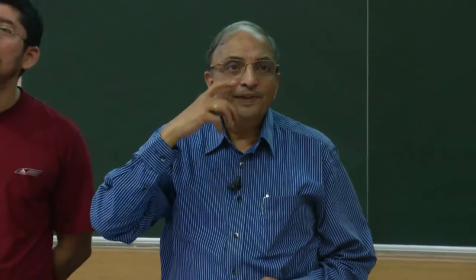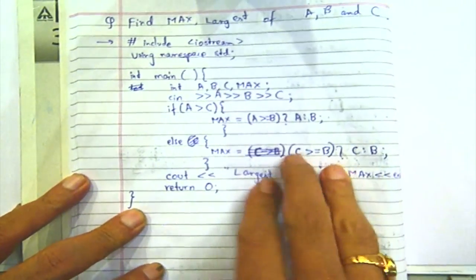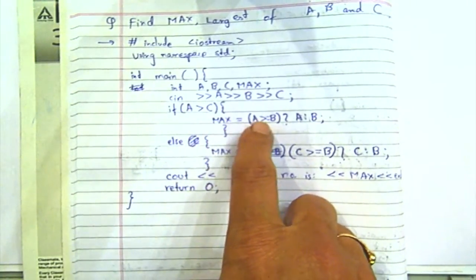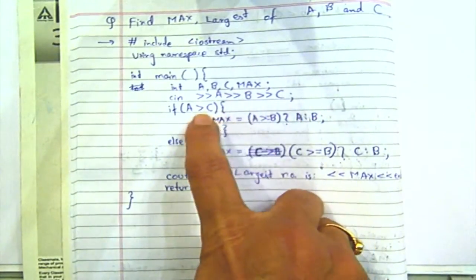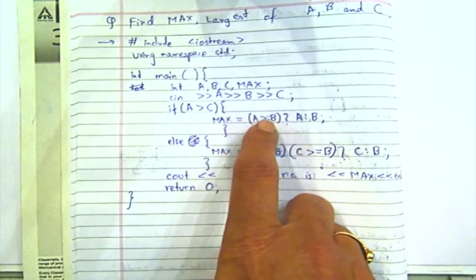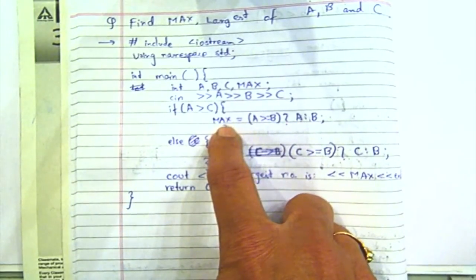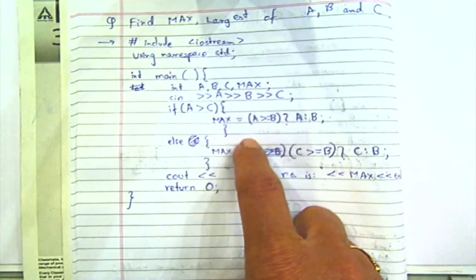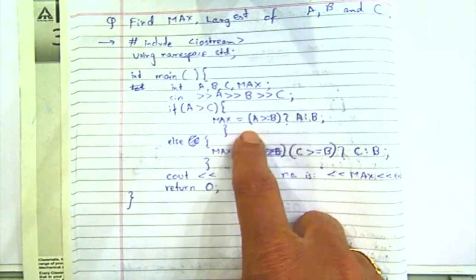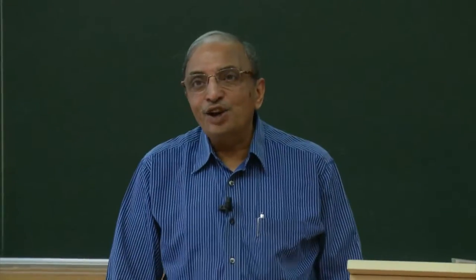Here is one program which says: if A greater than C, max is equal to A greater than or equal to B — A or B. So what he is trying to do is: if A is greater than C, then he is comparing A and B, and depending upon which one is greater, he is putting it onto max. What is the possible problem with this? B can be larger than A but smaller than C — because B and C are not being compared in this. A is greater than C does not necessarily mean that B is greater than C.